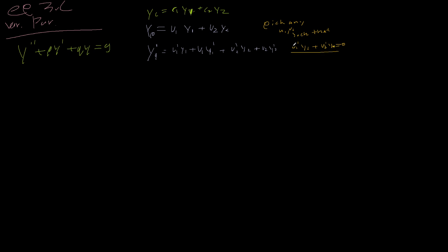We just make this choice. What does that leave us with? Well, those terms cancel — we said they are equal to zero. So we are left with y_p' equals u1·y1' plus u2·y2'.